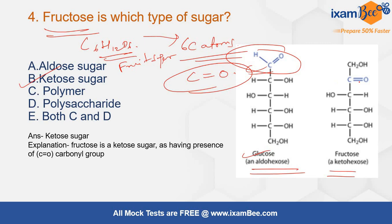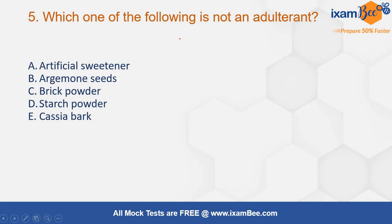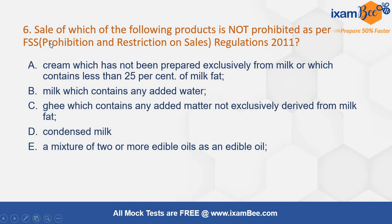The next question is: which one of the following is not an adulterant? Options are artificial sweetener, argemone seed, brick powder, starch powder, or cassia bark. The correct answer is artificial sweetener — it is not an adulterant. Next question: the sale of which product is not prohibited as per the FSS Prohibition and Restriction on Sales Regulation 2011? The correct answer is condensed milk — its sale is not prohibited. The rest are prohibited, including milk with added water, which is also prohibited under the FSS Regulation 2011.